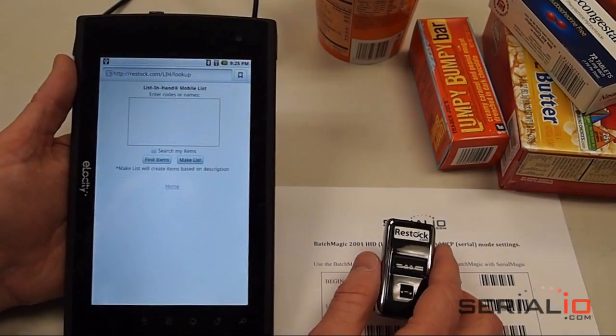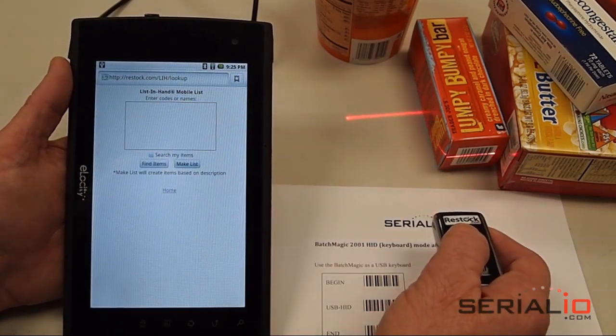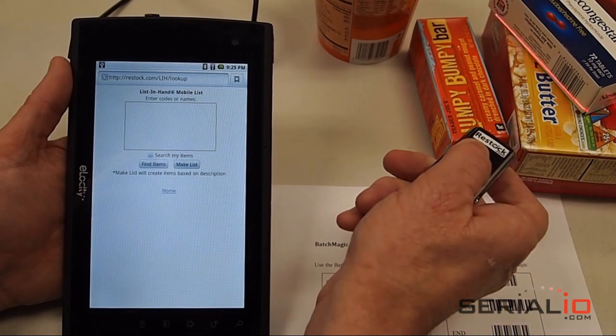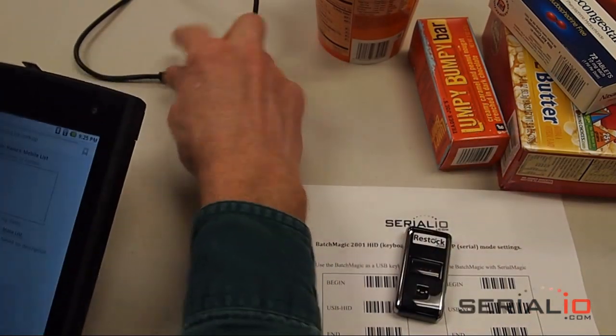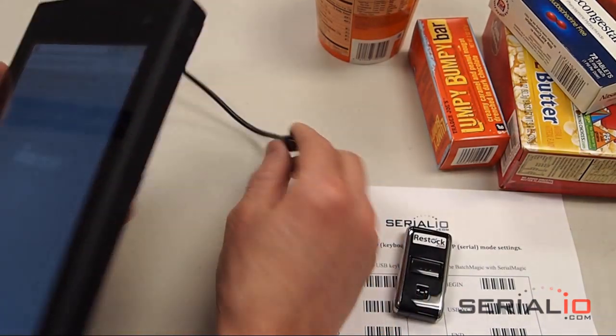Once the scanner is in USB keyboard mode, you can scan the items you want into the memory of the scanner and then plug in the scanner cable to the USB connector on the Elocity tablet.